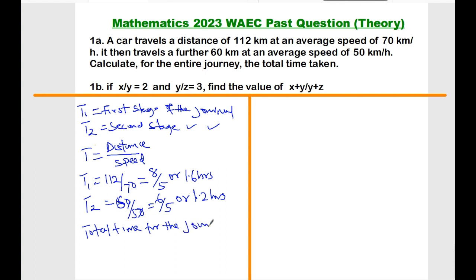The entire journey is T1 plus T2, which is 1.6 plus 1.2. The final answer is 2.8, so it takes 2.8 hours for the entire journey.